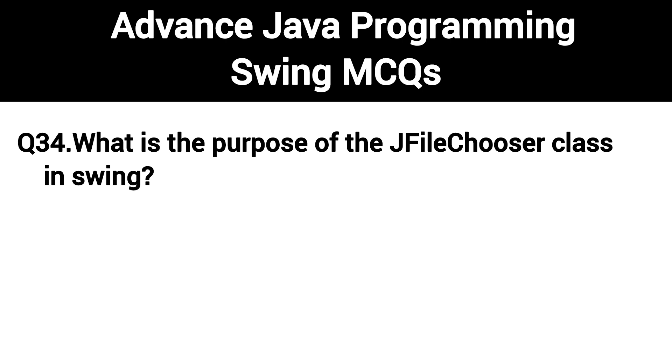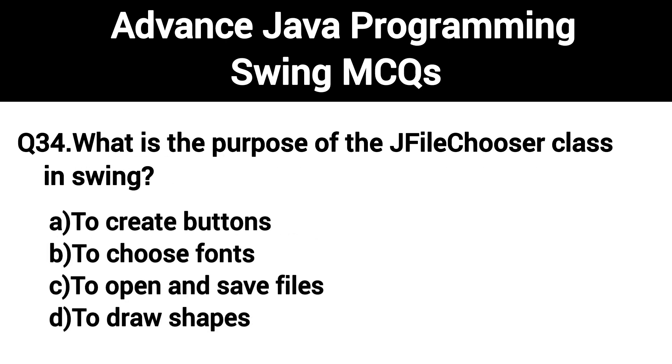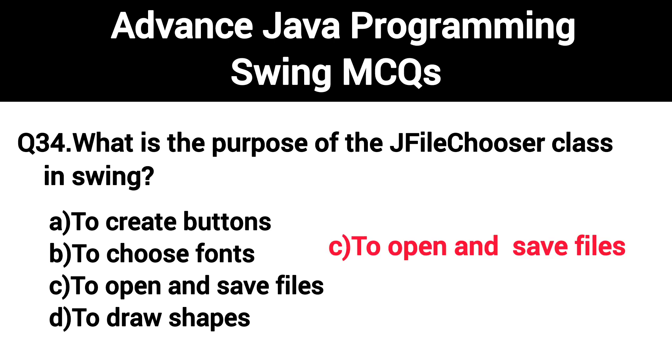Q34. What is the purpose of the JFileChooser class in Swing? The right answer is Option C: To open and save files.